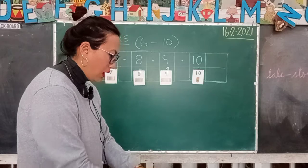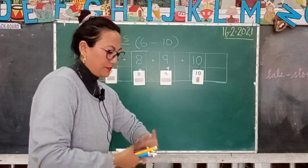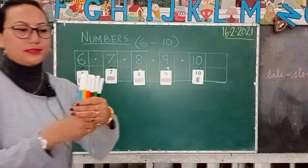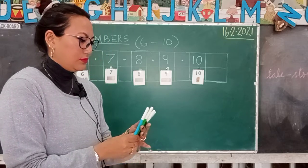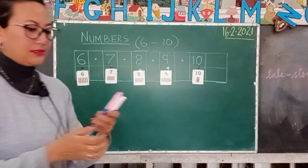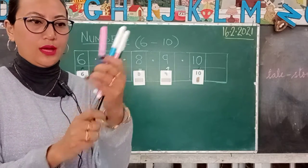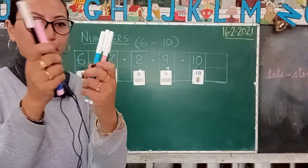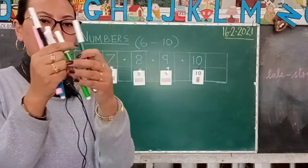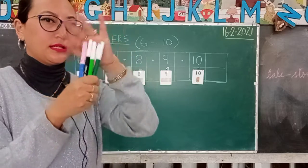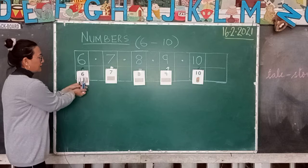Now I will show you with the help of color pencils. Let's count: one, two, three, four, five, six — how many color pencils do I have here? Six! This is number 6.